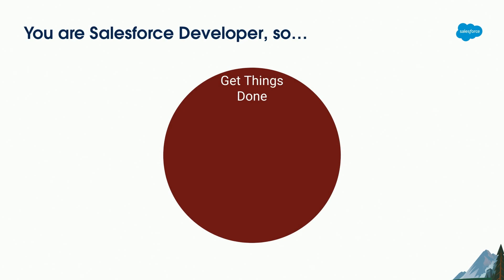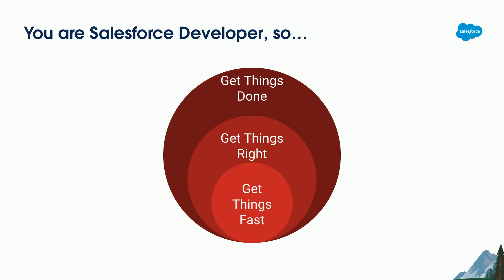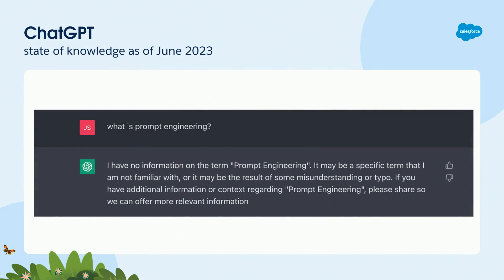I suppose that you are here because you are a Salesforce developer, which means that people are paying you for getting things done, for delivering software which works. On top of this, you are obligated to get things right — code quality, having no bugs is the basic of the job. And if we do not negotiate about getting things done and getting things right, the only difference is how fast you can deliver your task, which means that the difference between a good developer and an average one is just this performance of delivery.